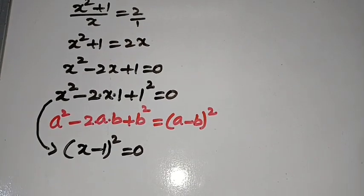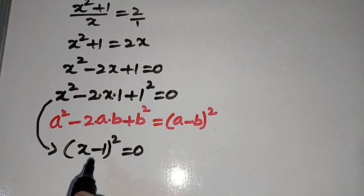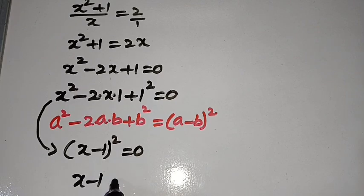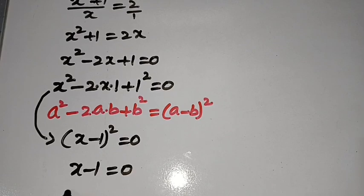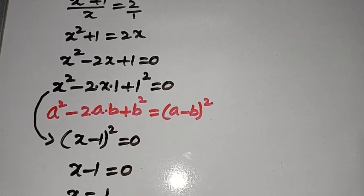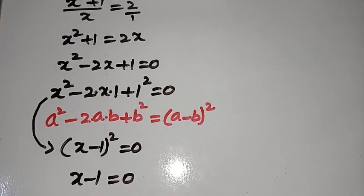When x minus 1 whole square is equal to 0, taking square root on both sides, x minus 1 is equal to 0. x minus 1 is equal to 0 implies x is equal to 1. So here actually we find that x is equal to 1.